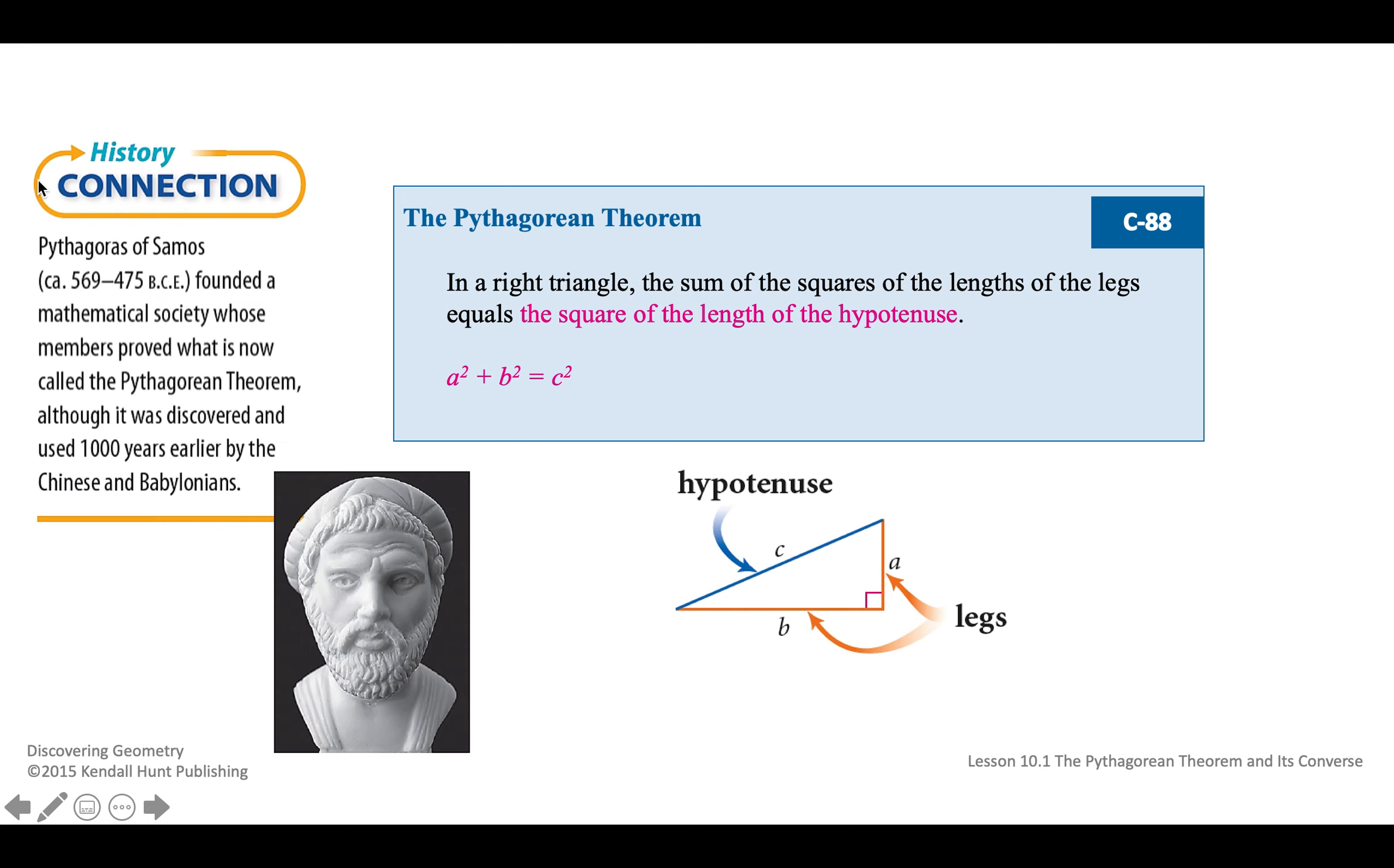So here is the Pythagorean Theorem. It relates the lengths of the legs to the length of the hypotenuse. In a right triangle, the sum of the squares of the lengths of the legs equals the square of the length of the hypotenuse. As a formula, we write A squared plus B squared equals C squared, because if you square the length A and you add it to the length B squared, you get the length C squared.